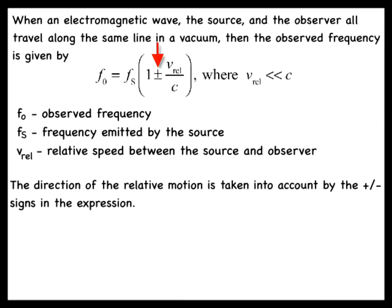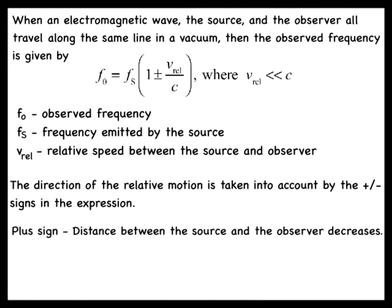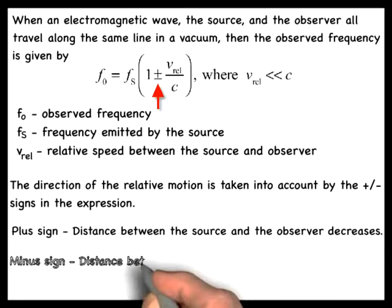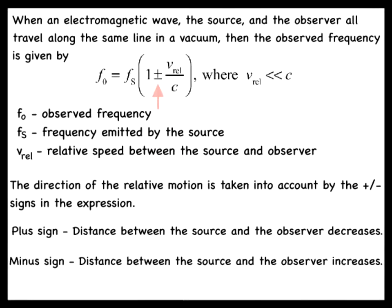The plus sign is used when the distance between the source and the observer decreases, and the minus sign is used when the distance between them increases.